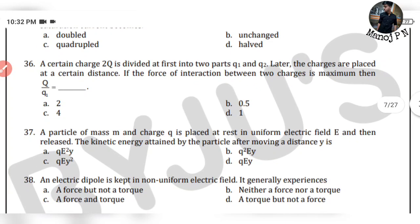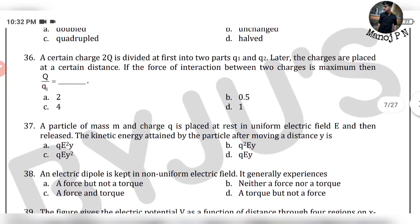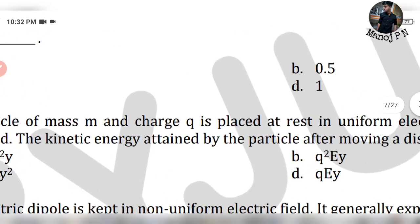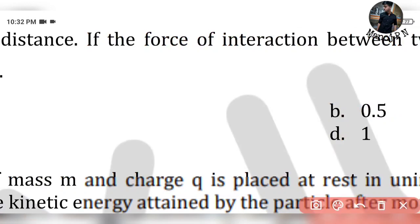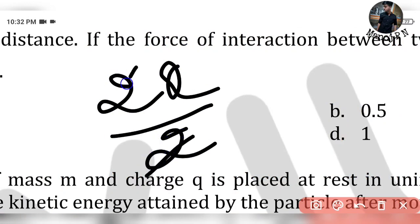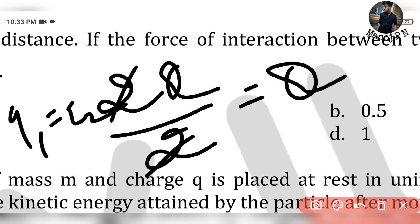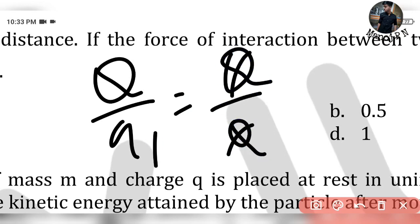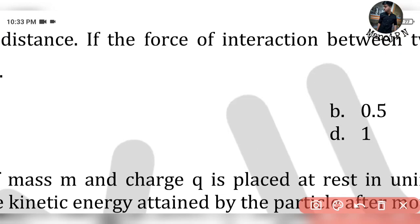36th question: A certain charge 2Q is divided into two parts Q1 and Q2. The charges are placed at a certain distance. If the force of interaction between the two charges is maximum, then it is very simple — divide 2Q by 2, so Q1 is equal to Q2 equals Q. Option D.